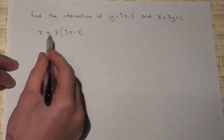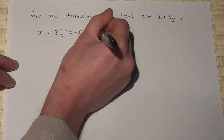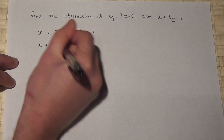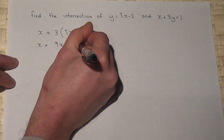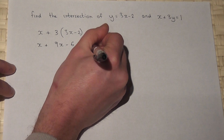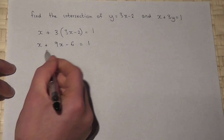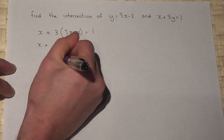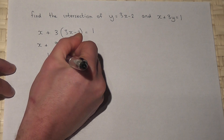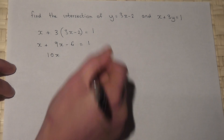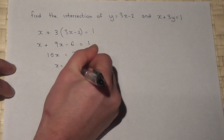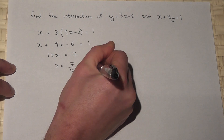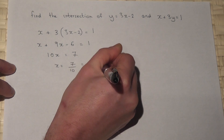And x plus 3y equals 1. If I then expand this, I get x plus 9x, take away 6 equals 1. I can simplify: x plus 9x is 10x. Adding 6 to the other side gives 7, so x equals 7 over 10, or 0.7.